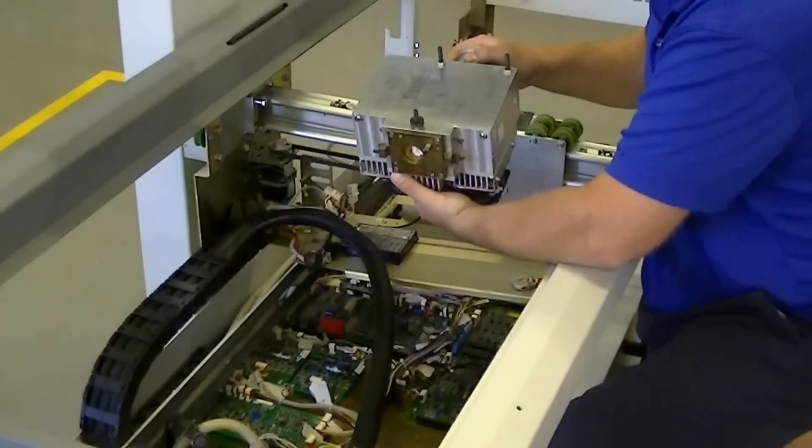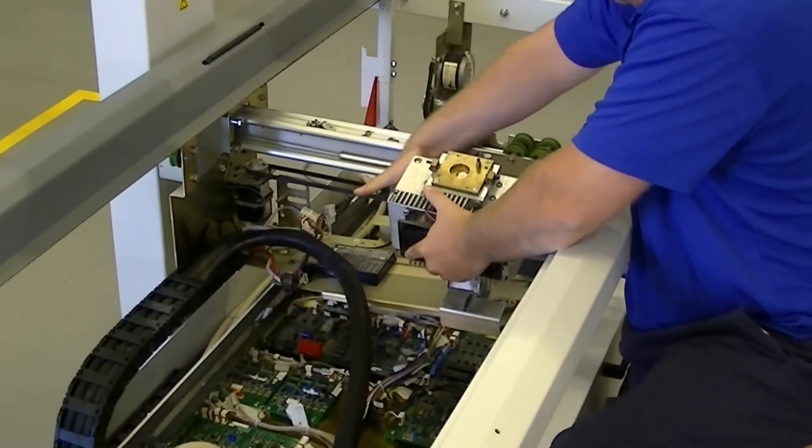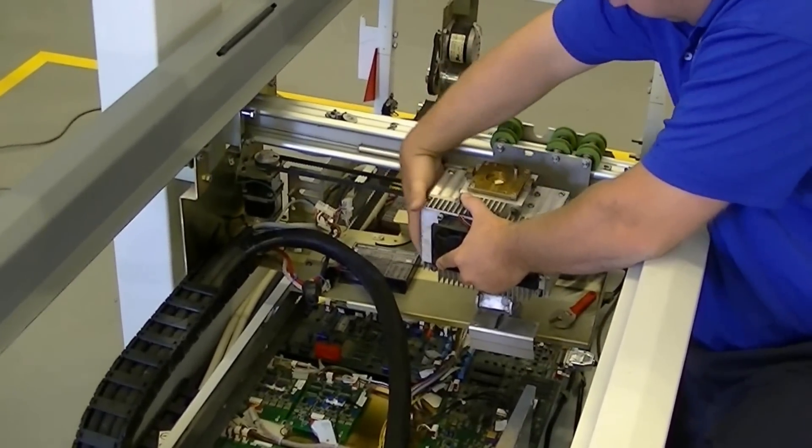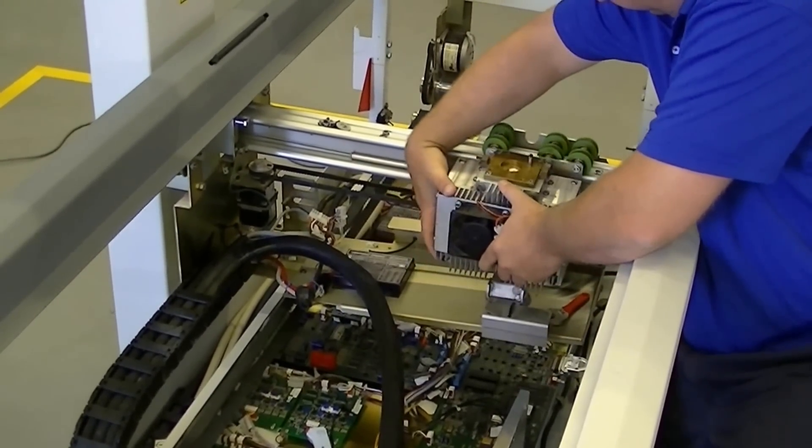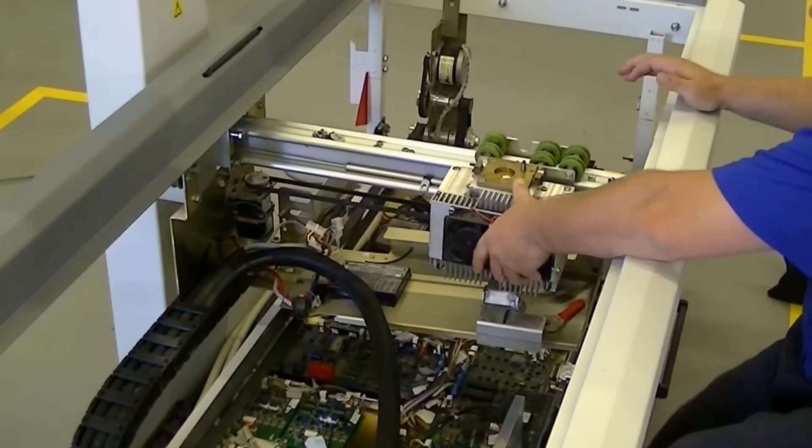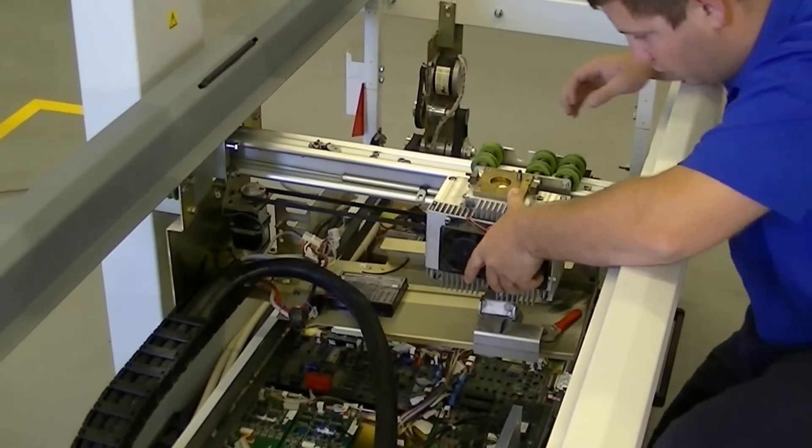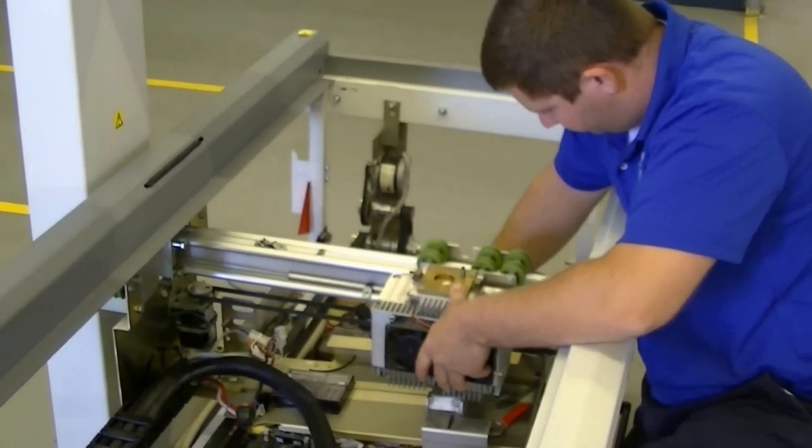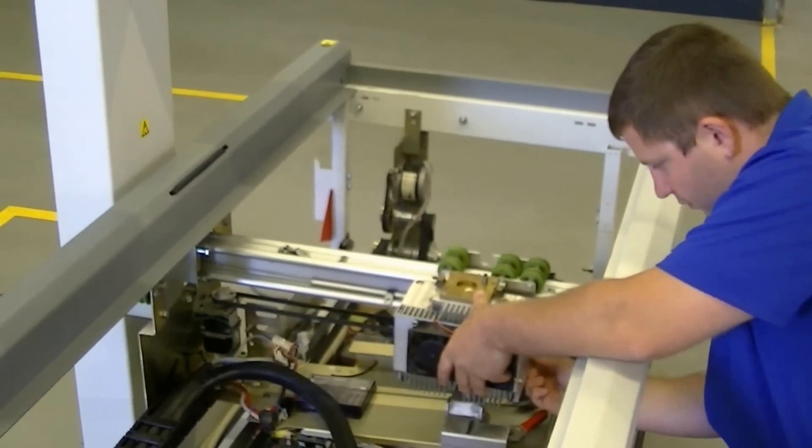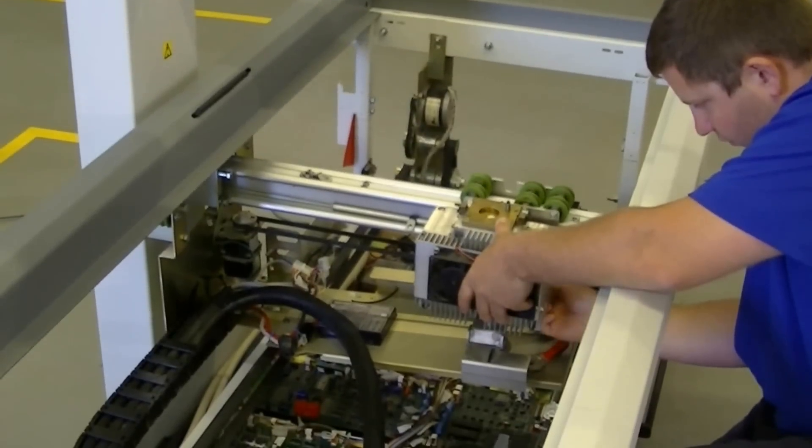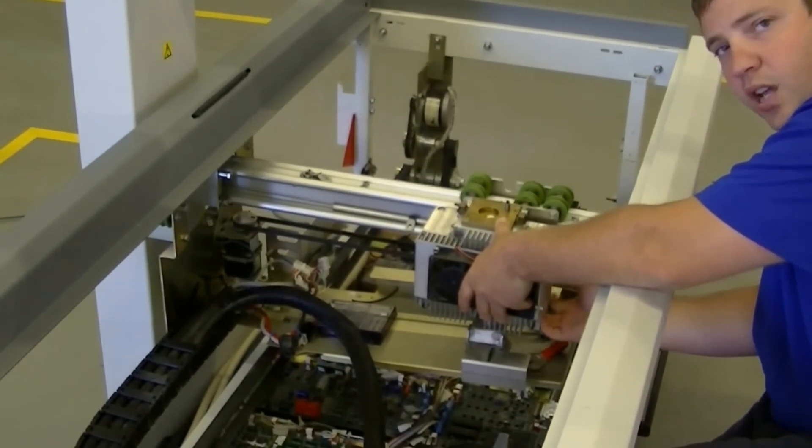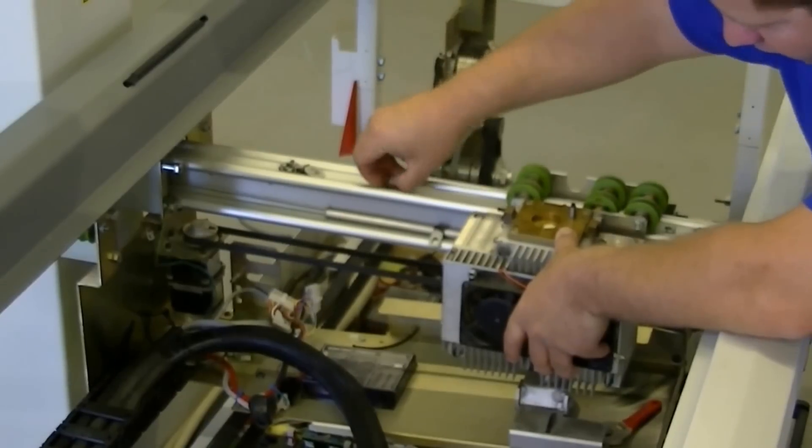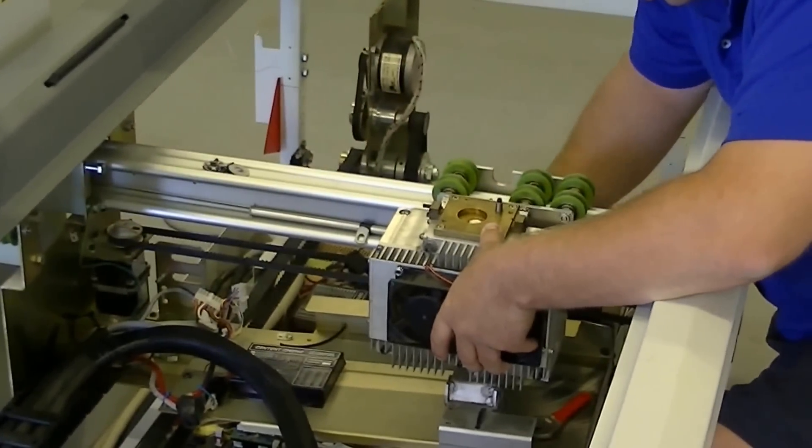Then we'll align the three bolts into the holes. Once you have it secured in here, you will want to put the two bottom nuts on it. You don't want to tighten them up at first, you just want to hand tighten them. Then we will move it around to align.